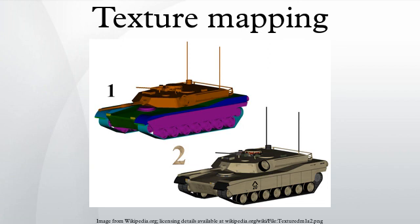Perspective Correct Texturing: Texture coordinates are specified at each vertex of a given triangle, and these coordinates are interpolated using an extended Bresenham's line algorithm. If these texture coordinates are linearly interpolated across the screen, the result is affine texture mapping. This is a fast calculation, but there can be a noticeable discontinuity between adjacent triangles when these triangles are at an angle to the plane of the screen, appearing bent.